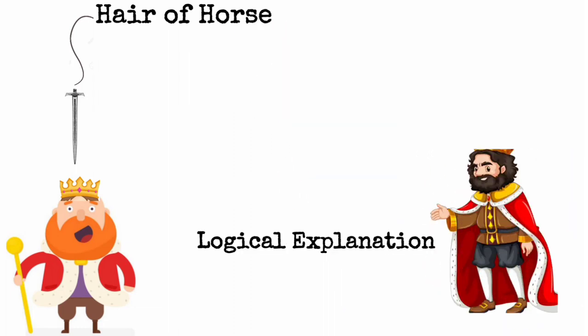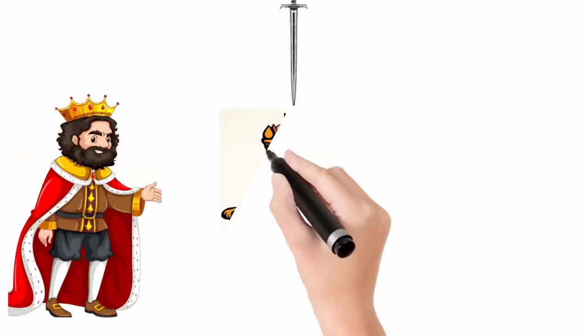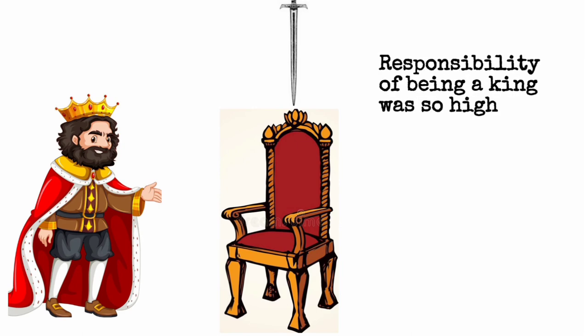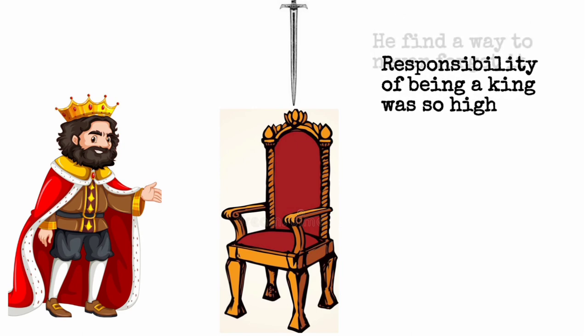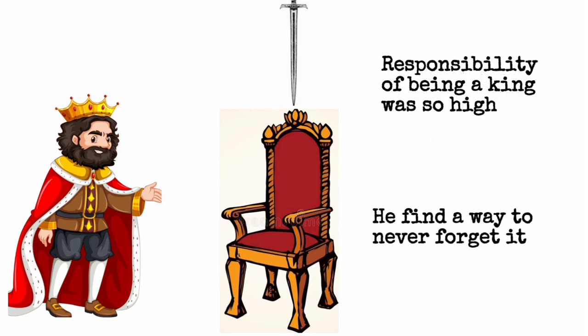When he addressed Dionysus looking for a logical explanation, Dionysus explained that this sword always stayed like that above the throne. The responsibility of being a king was so high that he had to find a way to never forget it.